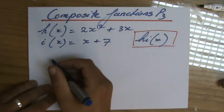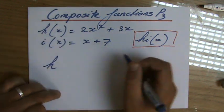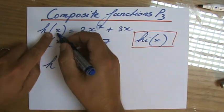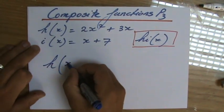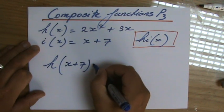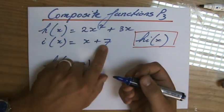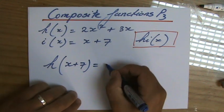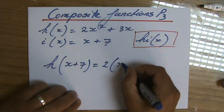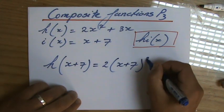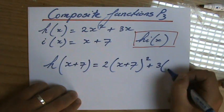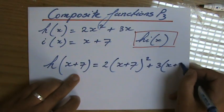Now I have to put i in h for x. So I'm going to put in x plus 7, which is the function of i in this particular function. So it's 2(x plus 7) squared plus 3 times (x plus 7).